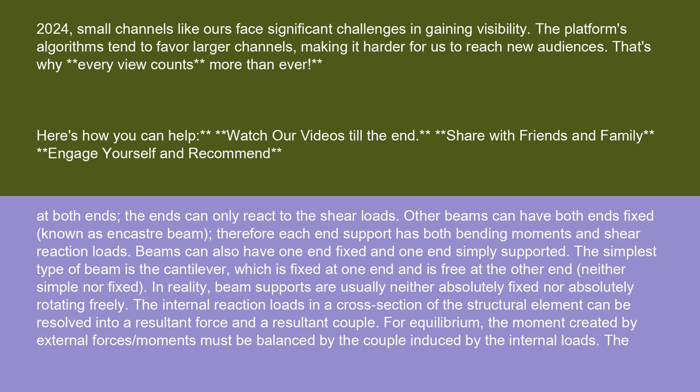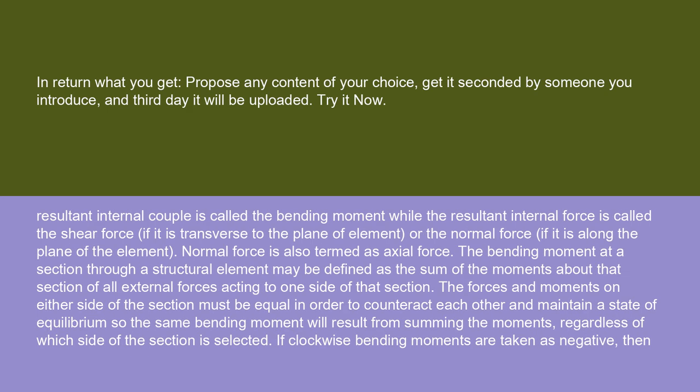The internal reaction loads in a cross-section of the structural element can be resolved into a resultant force and a resultant couple. For equilibrium, the moment created by external forces or moments must be balanced by the couple induced by the internal loads. The resultant internal couple is called the bending moment while the resultant internal force is called the shear force, if it is transverse to the plane of element, or the normal force, if it is along the plane of the element. Normal force is also termed as axial force. The bending moment at a section through a structural element may be defined as the sum of the moments about that section of all external forces acting to one side of that section. The forces and moments on either side of the section must be equal in order to counteract each other and maintain a state of equilibrium, so the same bending moment will result from summing the moments, regardless of which side of the section is selected. If clockwise bending moments are taken as negative,